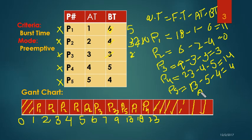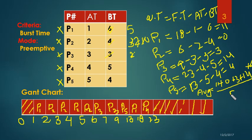Now I'm going to calculate the average waiting time. The average waiting time equals the sum of all waiting times divided by the number of processes. 11 plus 0 plus 3 plus 14 plus 4 equals 32, divided by 5 — the total number of processes. The answer is 6.4. That was today's lecture. If you liked this lecture, please give a thumbs up and don't forget to subscribe. Good luck.